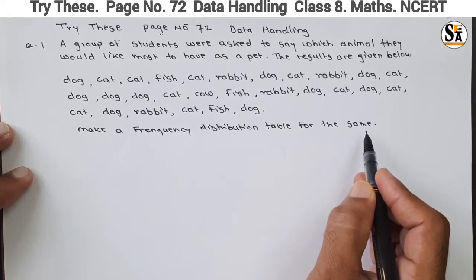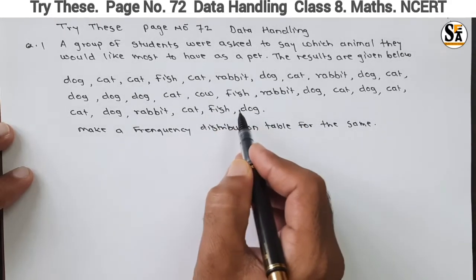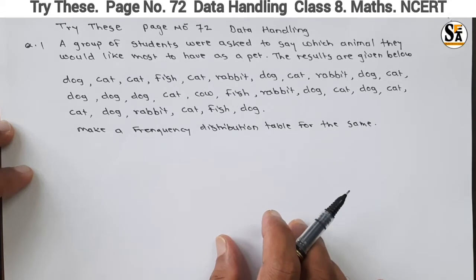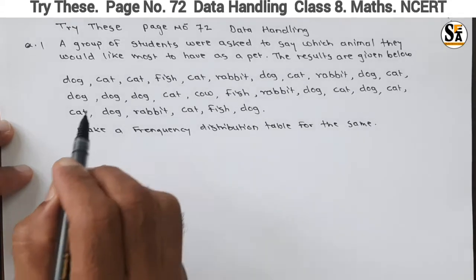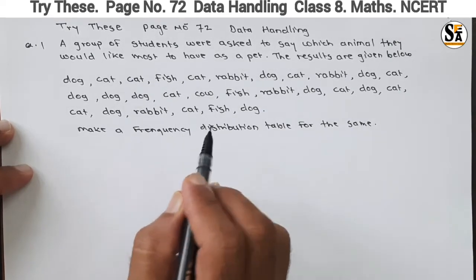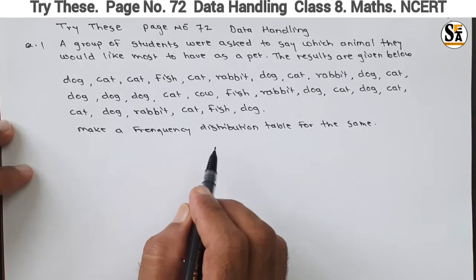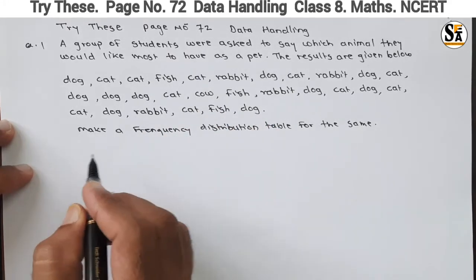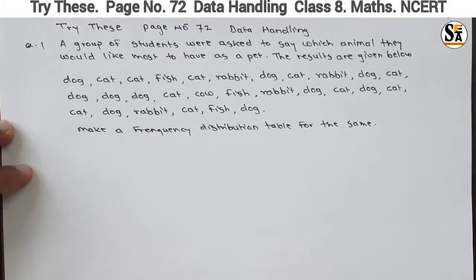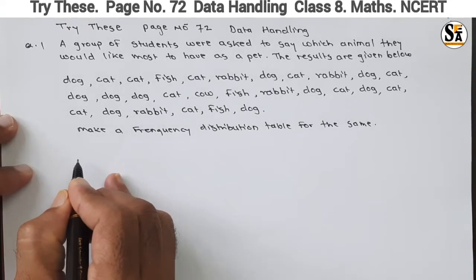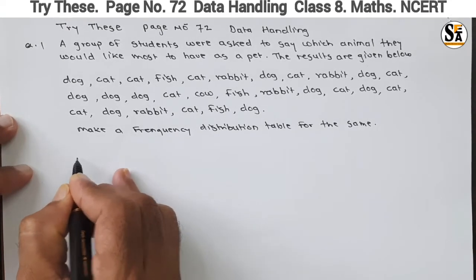Now to make a frequency distribution table, this data is given to us. What is meant by a frequency distribution table? A subject is given and its occurrence — its frequency — we have to find out. So we will first draw a frequency table. In the first column we will write the animal.